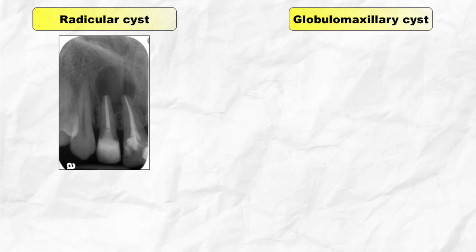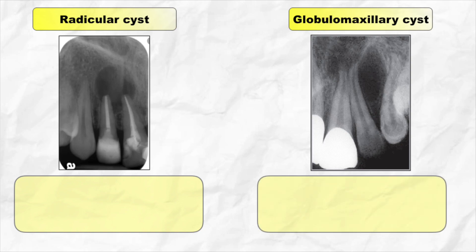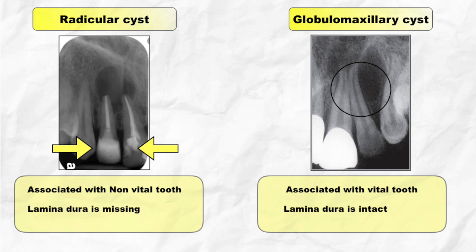How to differentiate a radicular cyst in the maxillary anterior region from non-odontogenic cysts like incisive canal cyst and globulomaxillary cyst? First, check the vitality of the tooth. Radicular cyst is commonly associated with a non-vital tooth, whereas non-odontogenic cysts are associated with a vital tooth. Radiologically, the lamina dura will be missing where the cyst is attached to the tooth, but the lamina dura of the associated tooth will be intact in case of a non-odontogenic cyst.